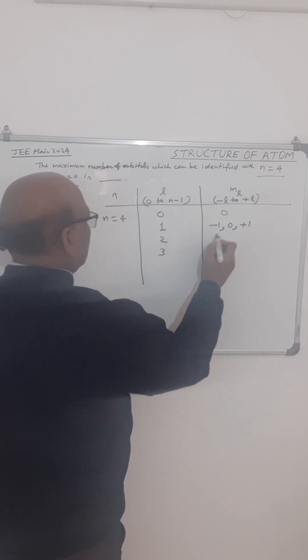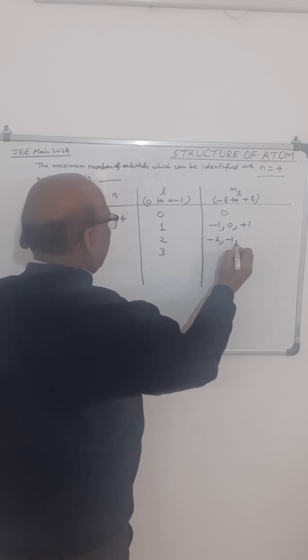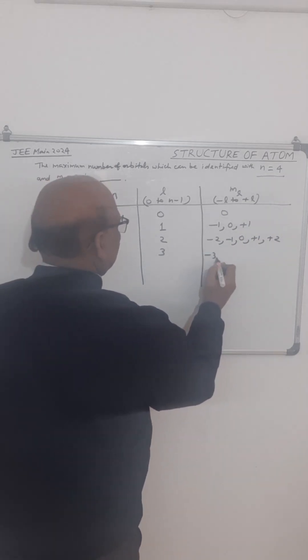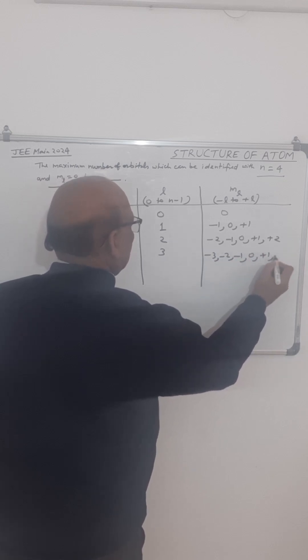For L equal to 2, this will be minus 2, minus 1, 0, plus 1, plus 2. For L equal to 3, it will be minus 3, minus 2, minus 1, 0, plus 1, plus 2, and plus 3.